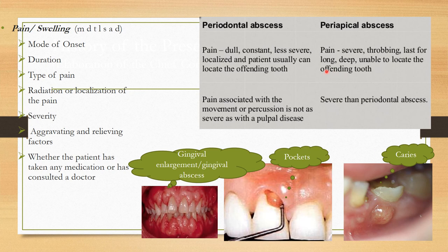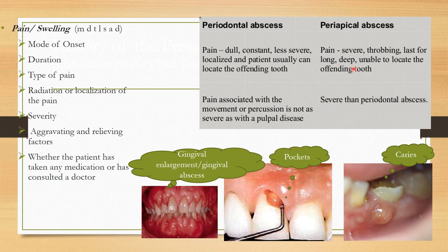A gingival abscess is more associated with the cervical gingival region. A periodontal abscess presents with dull, constant, less severe, localized pain; the patient can usually locate the offending tooth, and it is more towards the lateral aspect of the root. A periapical abscess involves more severe, throbbing pain that lasts long, the patient is unable to locate the offending tooth, and the tooth is usually associated with caries.